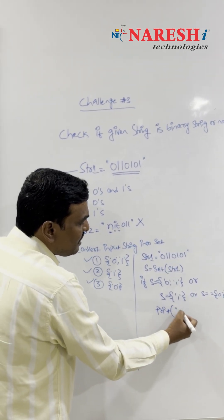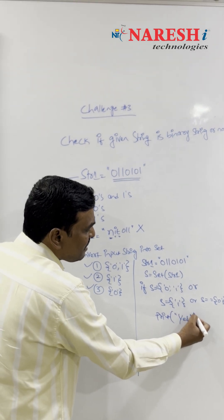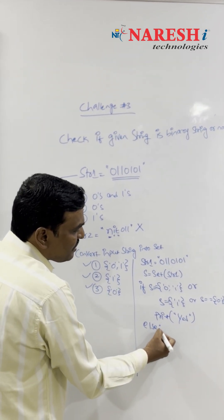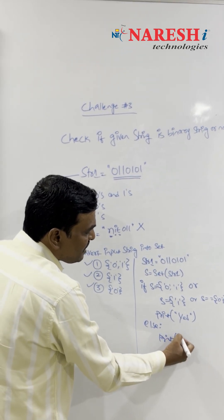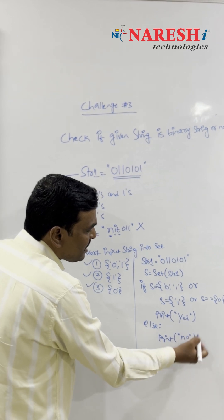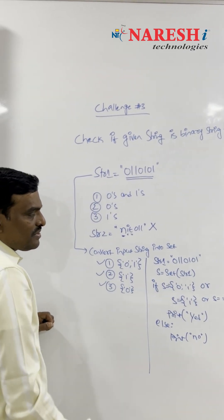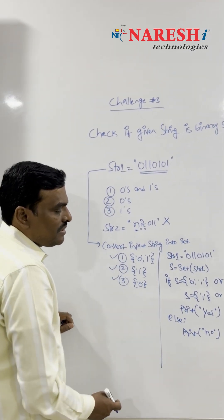Otherwise you are saying print 'the given string is not a binary string'. So this is a simple solution to find out whether the input string contains only 0s and 1s.